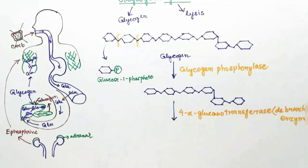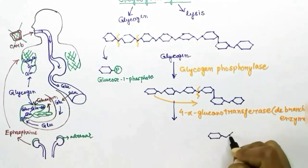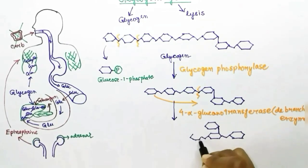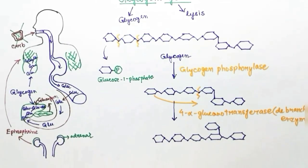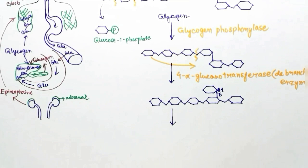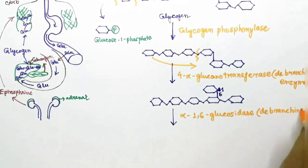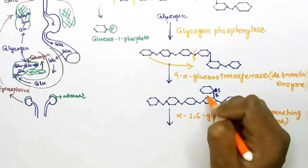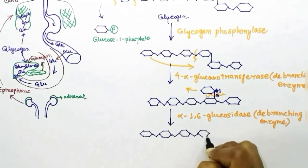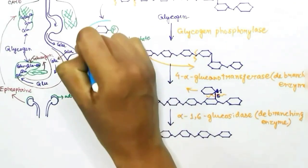When four glucose molecules are left on the branch, a debranching enzyme acts. It has two components: 4-alpha-glucanotransferase transfers a chain of three glucose units from the branch to the linear chain, leaving one glucose attached via a 1,6-glycosidic bond. Then alpha-1,6-glycosidase breaks that 1,6-glycosidic bond, completing the debranching.